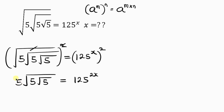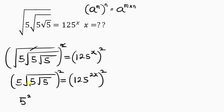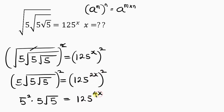We take the square of both sides again. This power affects both the 5 and the square root, so raising 5 to the power of 2 and the square cancels the square root, leaving 5 times 5 times the square root of 5 equal to 125^(4x), since 2x times 2 gives 4x.